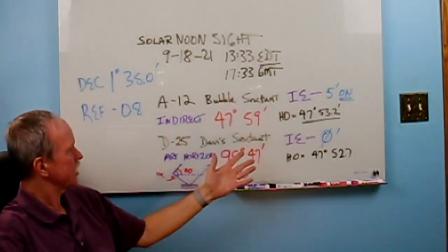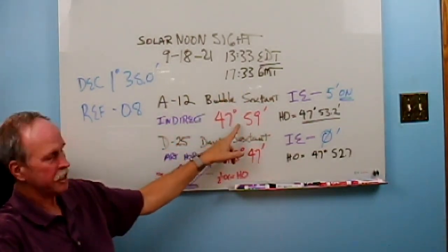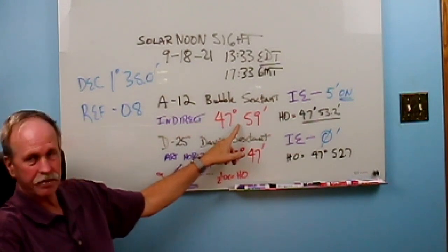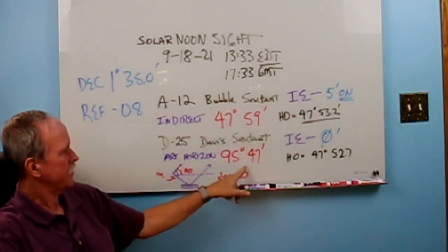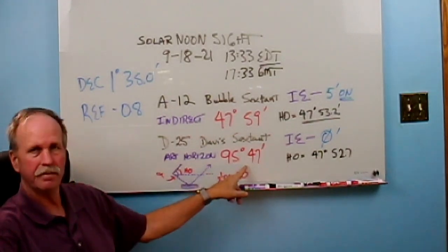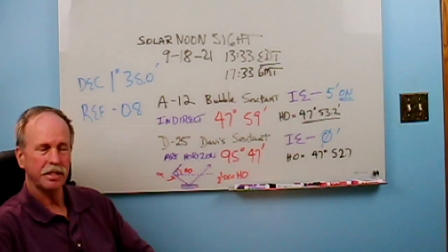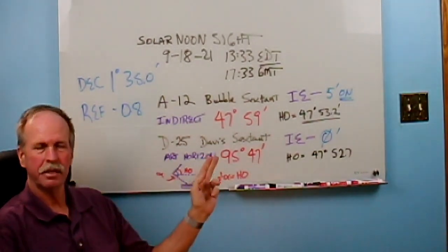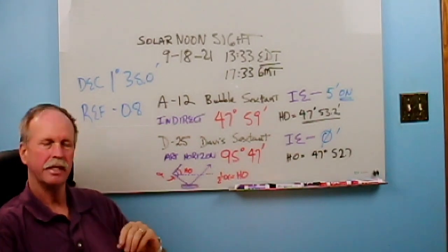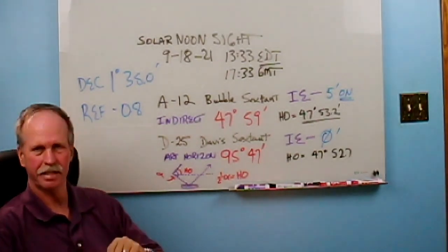And here are the readings that I got. On the bubble sextant, I got 47 degrees 59 minutes, and on the Davis sextant, I got 95 degrees 47 minutes. So let's cue up the music and see how I got these numbers, and then what I'm going to do with them to find my location. And then at the end, we'll have a little contest.